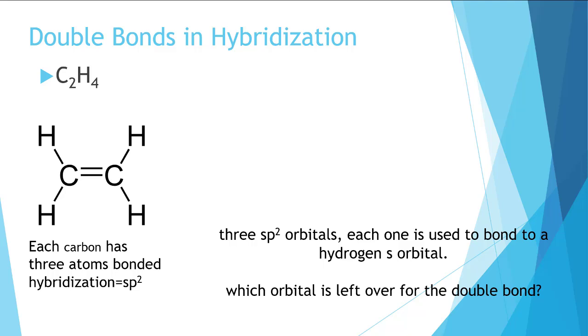These hybrid orbitals are what the atoms will use to form their sigma bonds. Remember that a bond is formed by overlapping orbitals, so it will also need an orbital from the H atom. Now what orbital does H have available to bond with? It just has the s orbital.